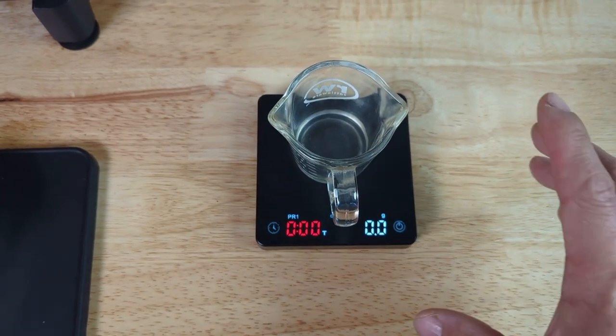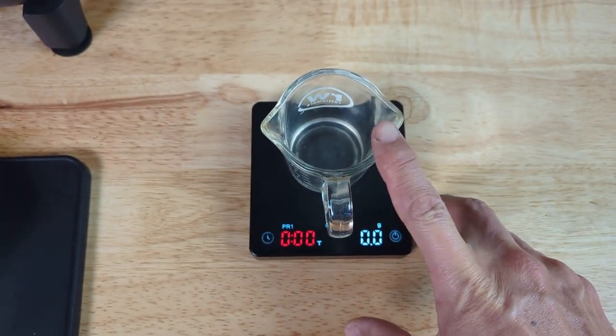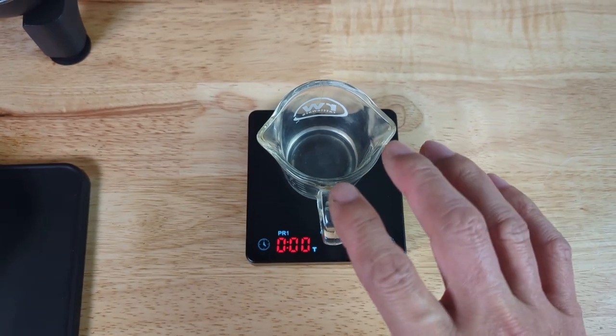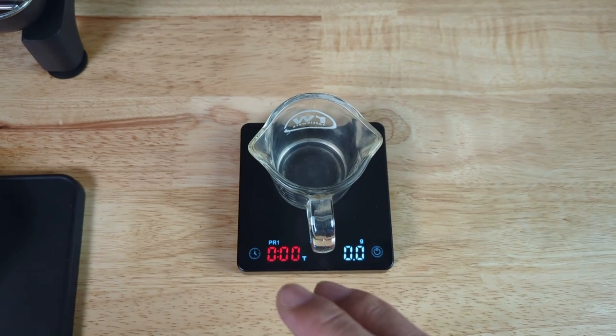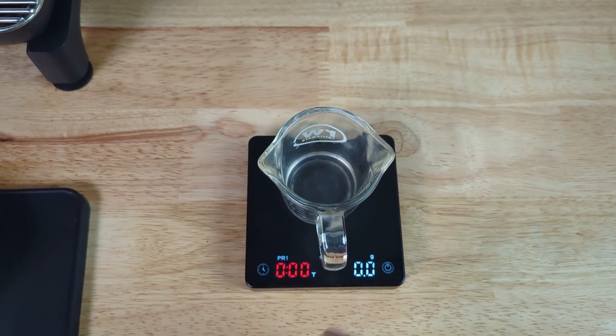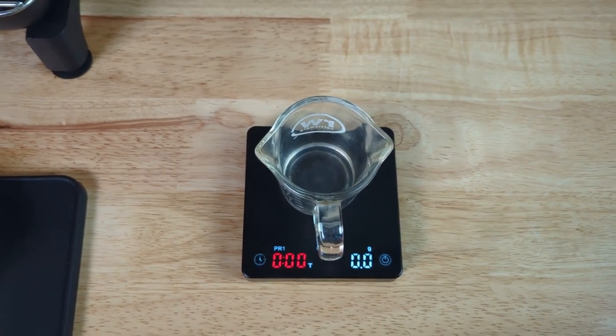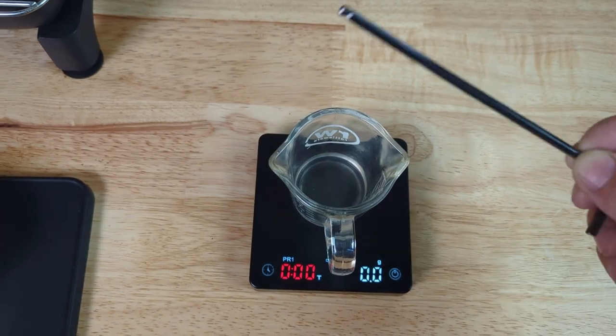So when the coffee drip starts, it actually changes the weight. When it changes the weight, it automatically starts counting. So let's see.